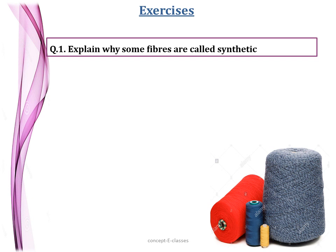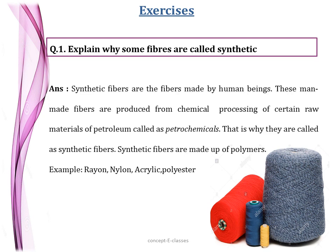The first question is: explain why some fibers are synthetic. In Chapter 3 we studied that there are two types of fibers — natural fibers and synthetic fibers. Natural fibers are directly obtained from a plant or an animal. Synthetic fibers are made by human beings; these man-made fibers are produced from chemical processing of certain raw materials of petroleum called petrochemicals. That is why they are called synthetic fibers. Synthetic fibers are made up of polymers — examples: rayon, nylon, acrylic, polyester.